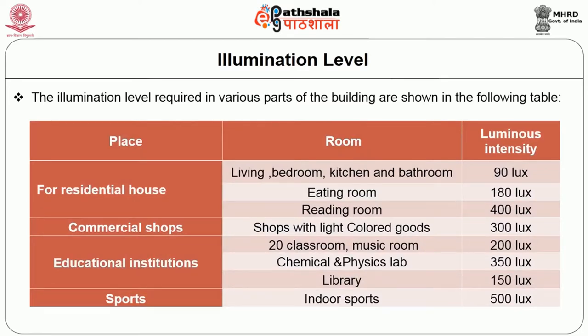The illumination levels required in various parts of a building are shown in a table. For example, for a residential house, the living room, bedroom, kitchen and bathroom need 90 lux. For indoor sports, 500 lux is required. For educational institutions such as a library, 120 lux is needed.